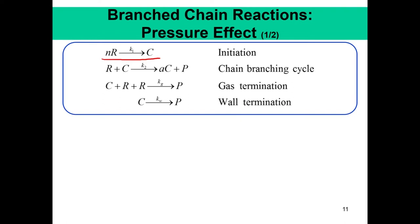R can react with C to form AC. A and AC are written in a generalized sense; C can be H, OH, etc. This essentially means there is a multiplication of chain carriers, which then forms a product P. There can be gas termination and wall termination. Chain branching is a very critical step — whether a mixture is explosive depends on whether, starting from a given initial temperature and pressure, the system will spontaneously react and temperature will rapidly rise due to fast energy generation.